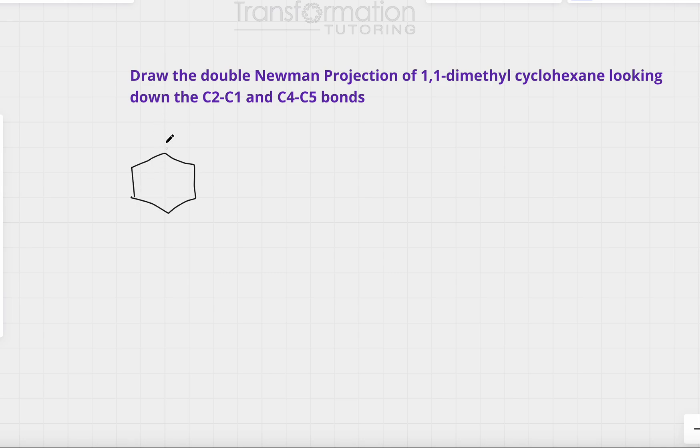Let's choose this as our carbon 1 and there are two methyl groups on carbon 1. So let's draw one methyl group and one more methyl group. Cyclohexane takes a conformation that is called chair and this is the most stable conformation of cyclohexane.